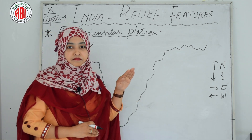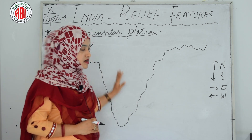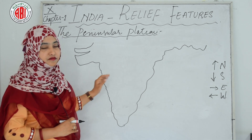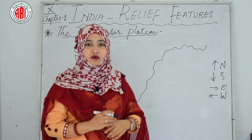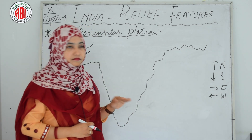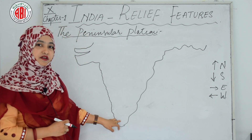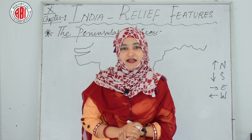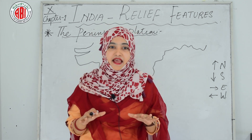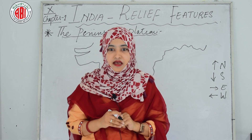The Indian Peninsula Plateau covers central India and the eastern and western parts of India. The peninsula plateau consists of two broad divisions: the central highlands, called the Malwa Plateau, and the Deccan Plateau.